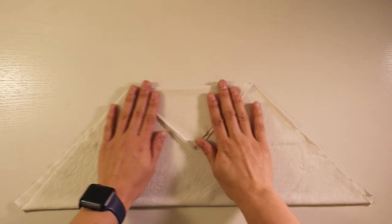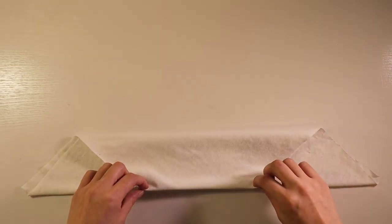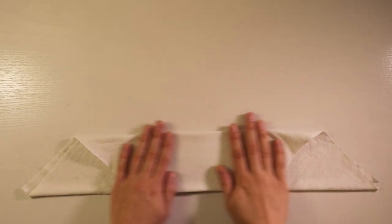Once you have a nice flat triangle we're going to fold it into thirds. So bring that top point to about the center and then fold that same side down to line up with the bottom.